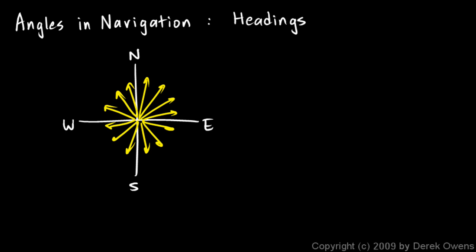Now people who are navigating use a method of specifying their direction that puts zero degrees as north. A heading of north is the same as a heading of zero degrees, and then the angles increase going clockwise from north.